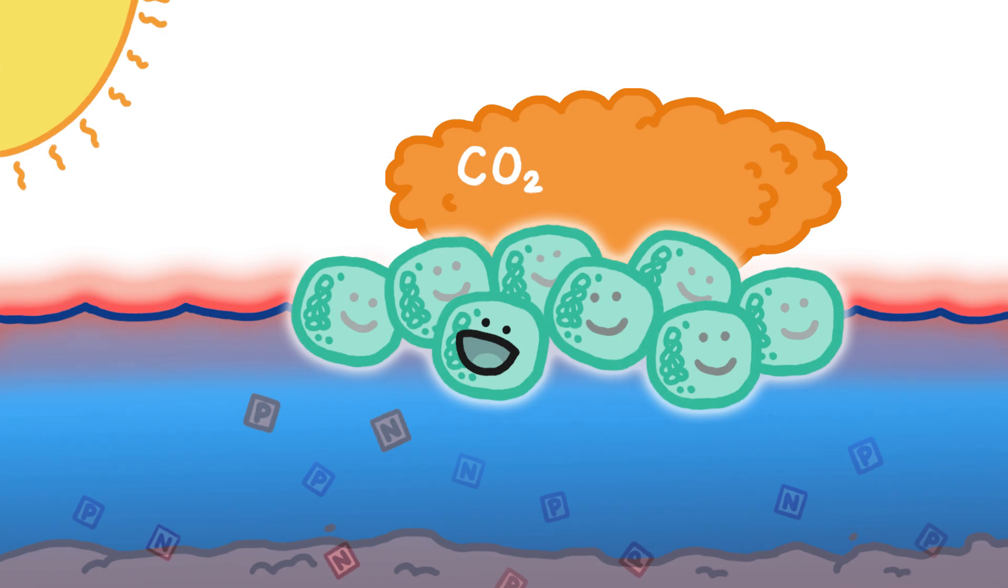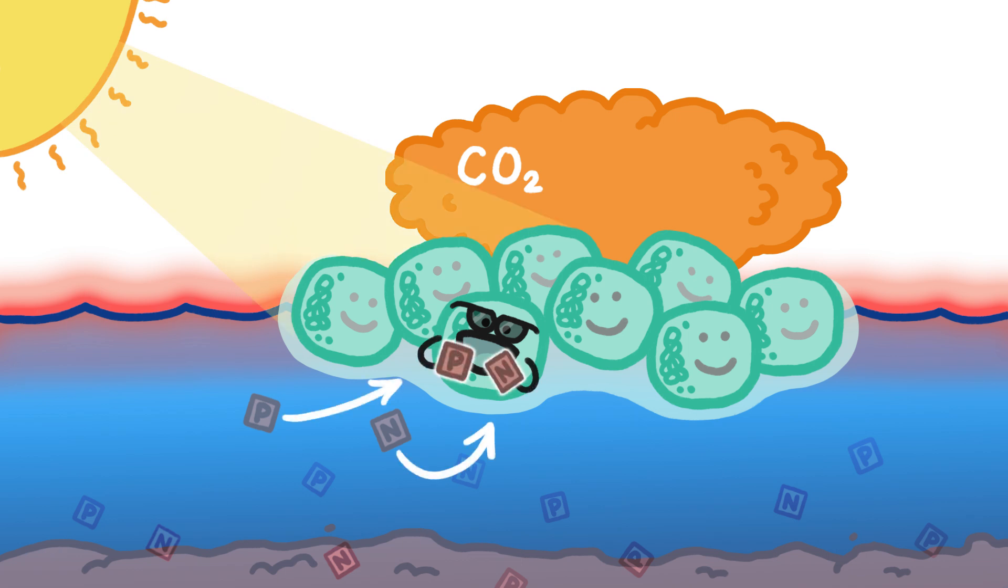But back to early life on Earth. In addition to being heat tolerant, the cyanobacteria grew in thin mats that were good at soaking up light and nutrients like nitrogen and phosphorus, and built nasty toxins to poison their competitors.